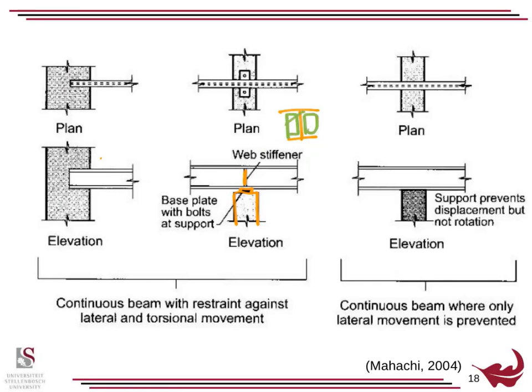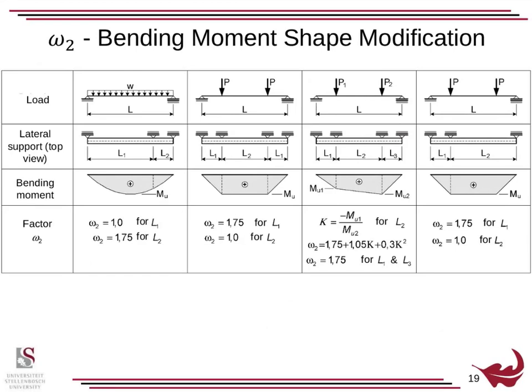You've got these web stiffeners that provide a sort of diaphragm wall action, so it cannot move sideways. If you don't have that, you have continuous where only lateral support is provided, and you end up with this situation. The effective length progressively increases as you have less and less support.